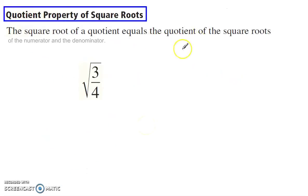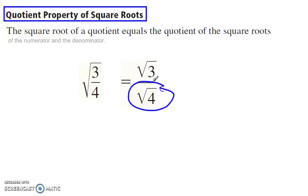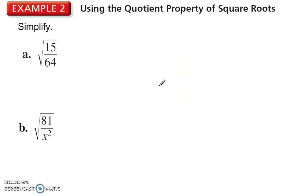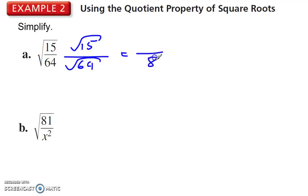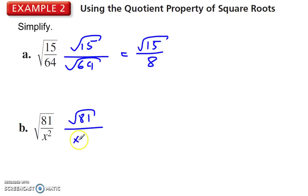Square root of a quotient equals the quotient of the square roots of those two. So I can split that up — this is useful because now I can simplify the denominator since we can't have radicals in the denominator. For √(15/64): 64 is a perfect square, so I can take the square root, giving radical 15 over 8. For √(81/x²): that's 9 over x.